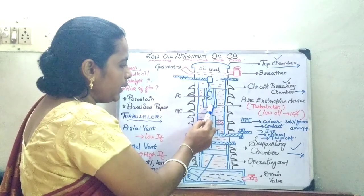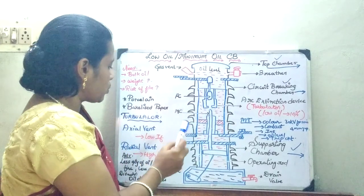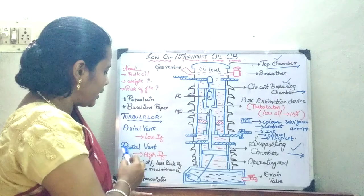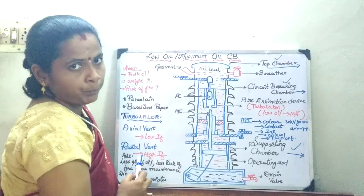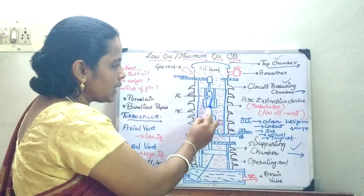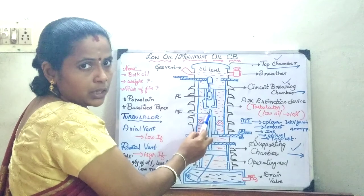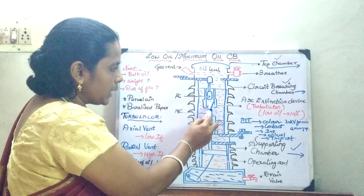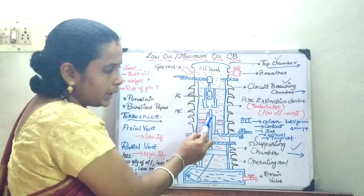So this tubulator is going to have both the vents: axial opening as well as radial opening. So whenever a fault occurs, initially they are going to be stuck with each other. When a fault occurs, arc is going to be struck between the fixed and the moving contact.